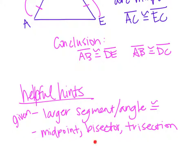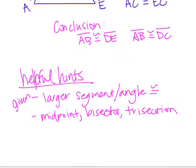Some helpful hints on the division property: you need specific given information. The larger segment or angle has to be congruent. The other thing that has to be given is a midpoint, a bisector, or maybe some trisection points — all three of these take a larger segment or angle and divide it up evenly, so all those even divisions will be congruent. To use the division property, you have to be given this information.